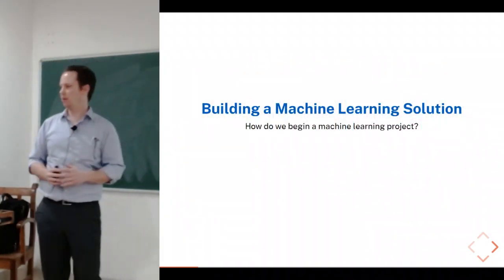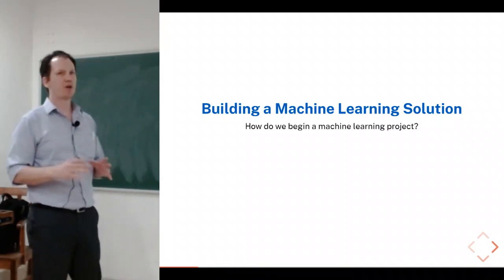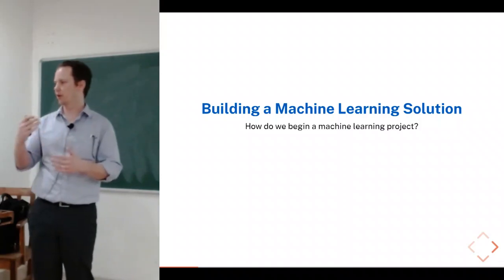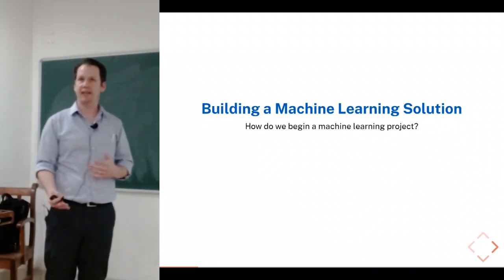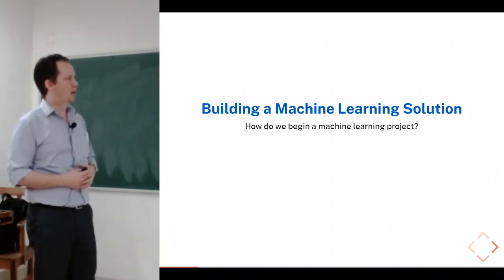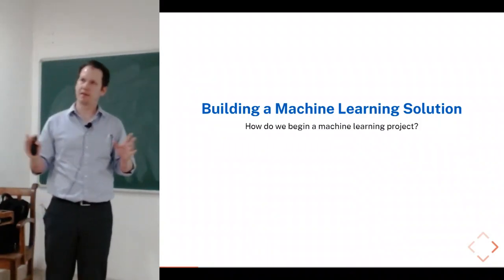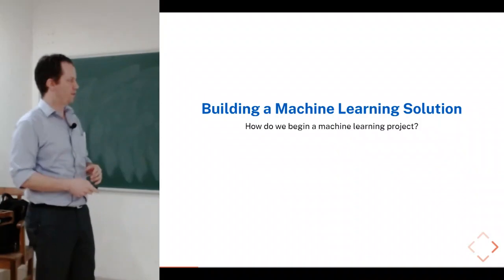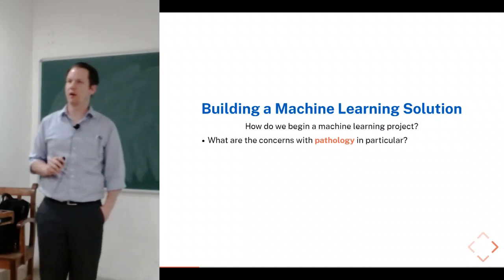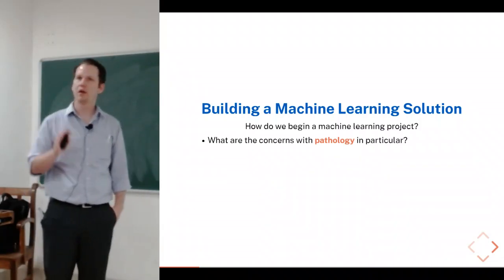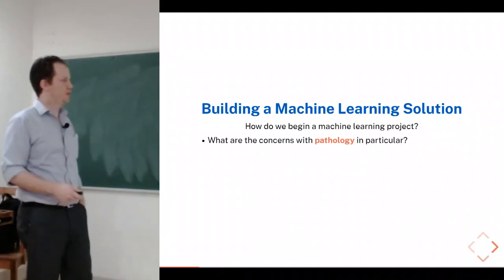So how do we actually go about building a machine learning solution? I'm going to cover a few things: the questions you need to ask at the beginning of a project, concerns with data you might experience, and the nitty-gritty details of how to divide your dataset to make sure your algorithm is robust. I'll also talk about pathology and healthcare concerns, especially when it comes to costs and the cost of misclassification in different scenarios.